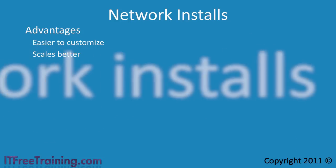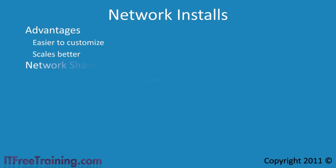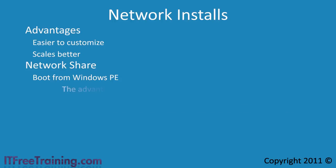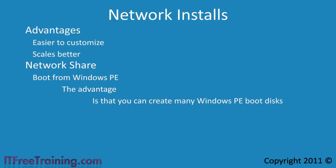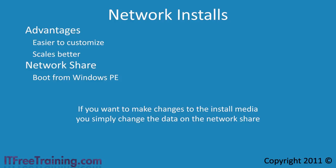In order to perform a network install, you can do so in one of two ways. The first is via a network share. To do this, you would boot from a network PE boot disk. Windows PE is a CD based boot disk that replaces the old floppy boot disks. The advantage of this method is that you can create many Windows PE boot disks which will not require updating too often. If you want to make changes to the install media, you simply change the data on the network share.